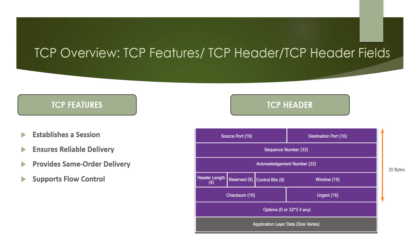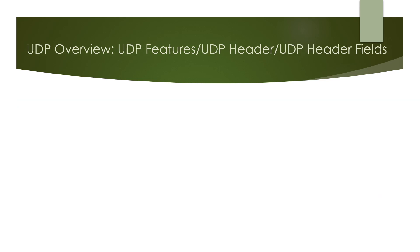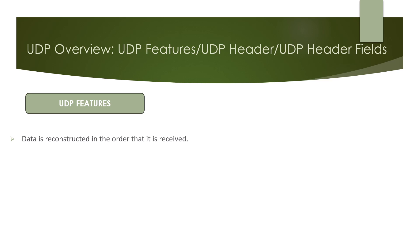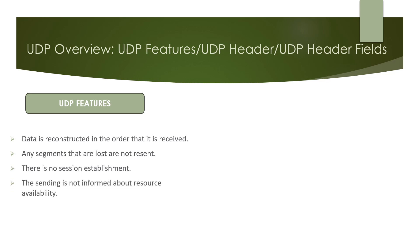Now we can look at the UDP protocol. UDP is such a simple protocol that it is usually described in terms of what it does not do compared to TCP. UDP features include: data is reconstructed in the order that it is received; any segments that are lost are not resent; there is no session establishment; and the sender is not informed about resource availability. UDP is a stateless protocol, meaning neither the client nor the server tracks the state of the communication session. If reliability is required when using UDP as the transport protocol, it must be handled by the application itself.